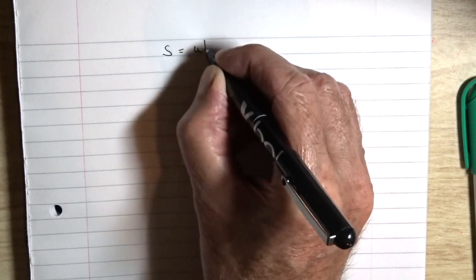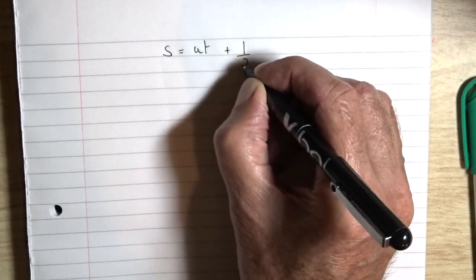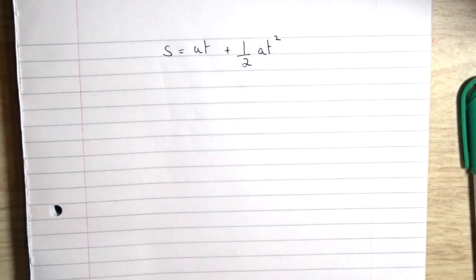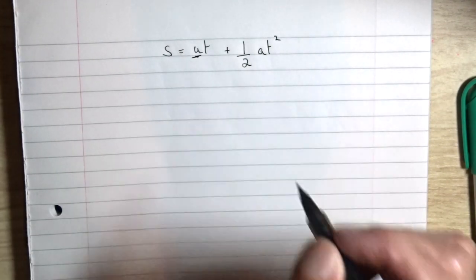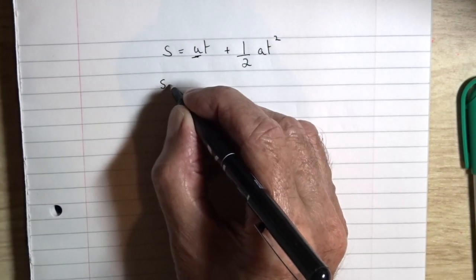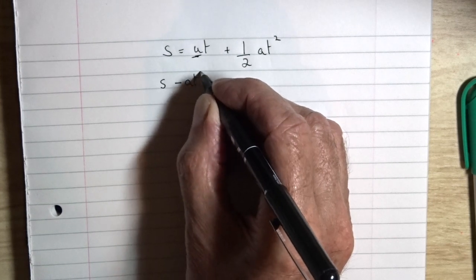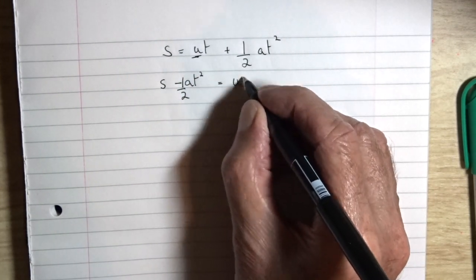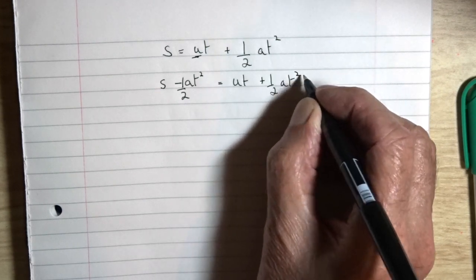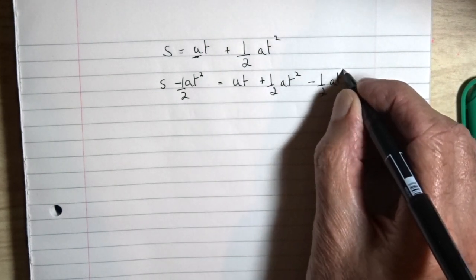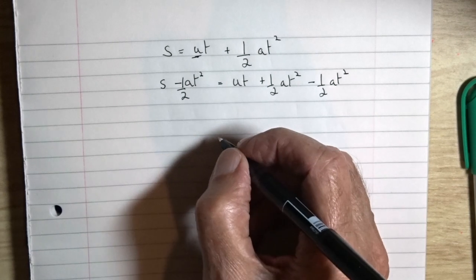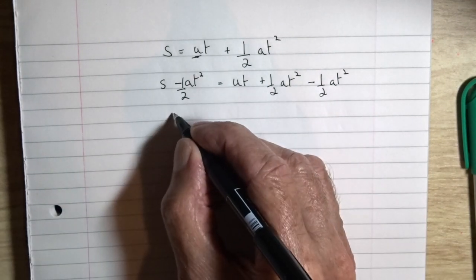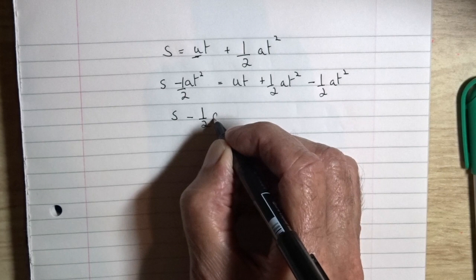Finally, looking at a slightly more complicated equation, again one of the equations of motion. s equals ut plus half at squared. Let's set about making u the subject of the equation. Well, we can move the half at squared across by subtracting half at squared from both sides. They'll cancel out on the right, so we're left with s minus half at squared equals ut.